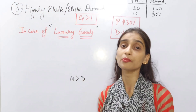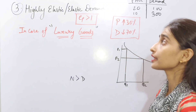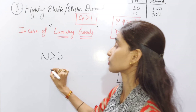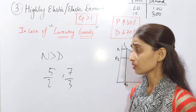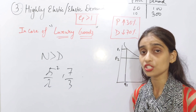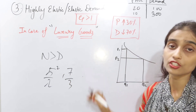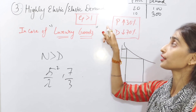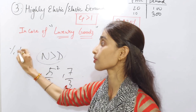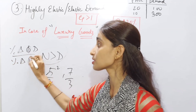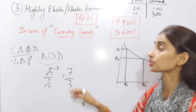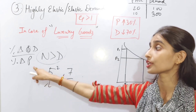The third one is highly elastic demand, also called elastic demand. Here EP is greater than 1. In this case, the numerator is greater than the denominator — for example, 5 by 2 or 7 by 3. The definition is: percentage change in quantity demanded is greater than percentage change in price. Quantity demanded changes more and more compared to the price change.